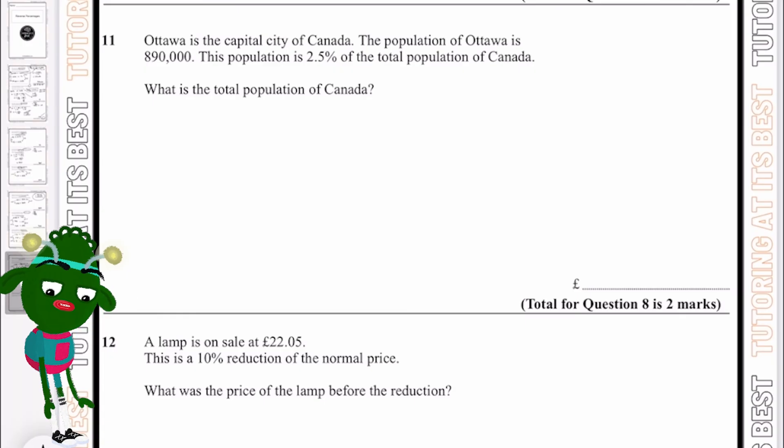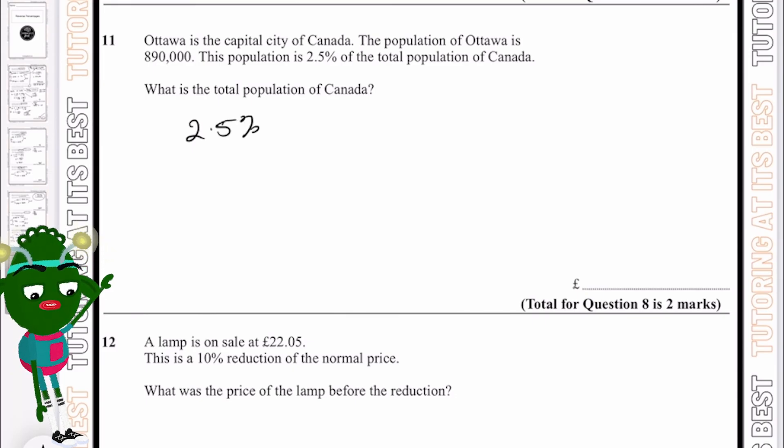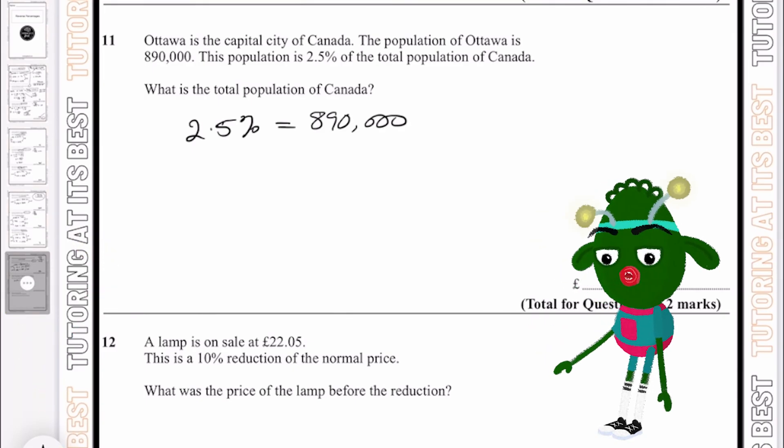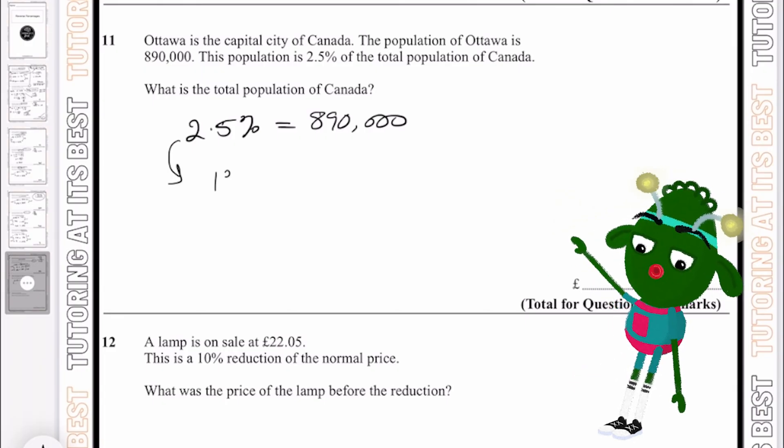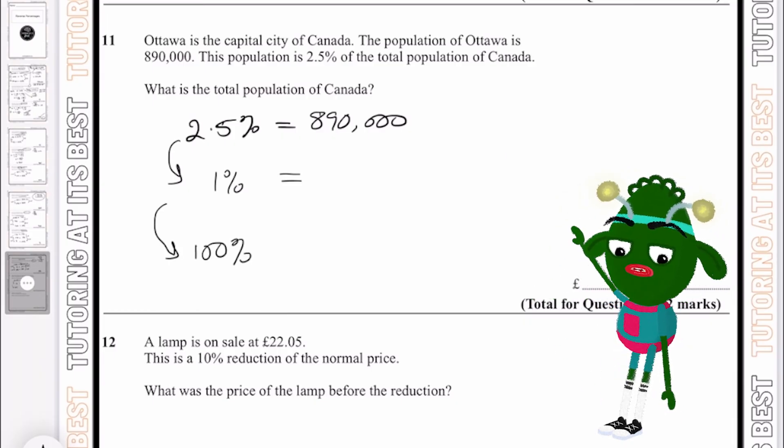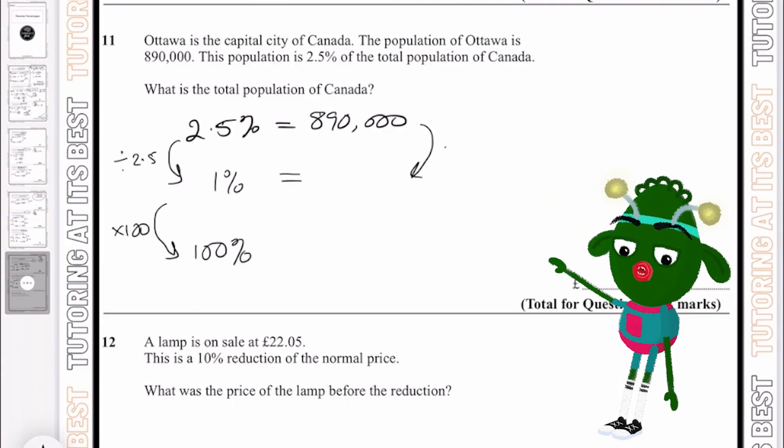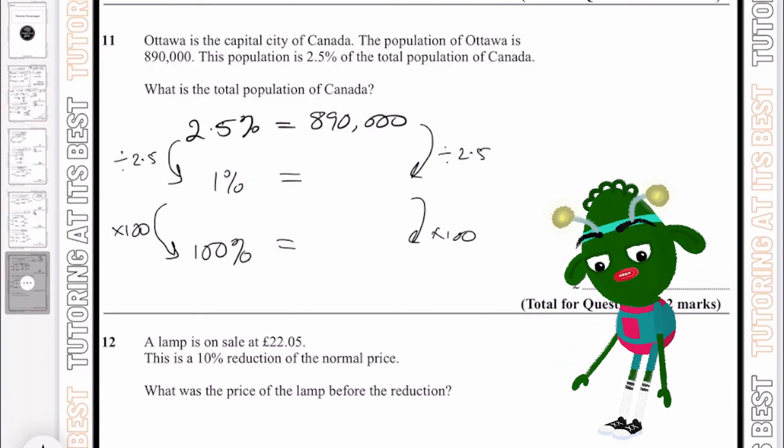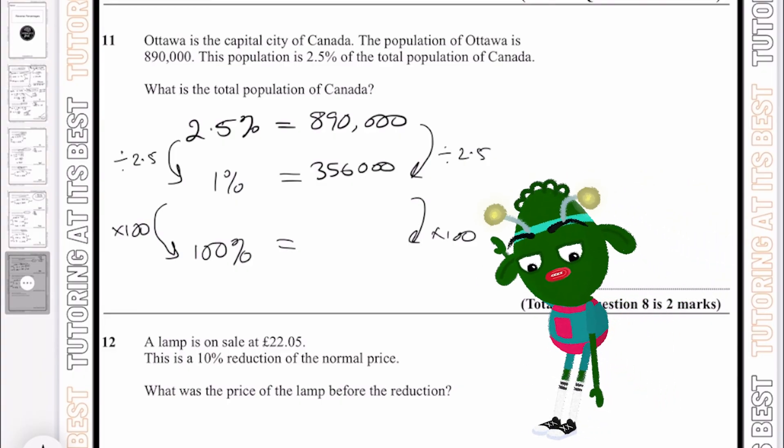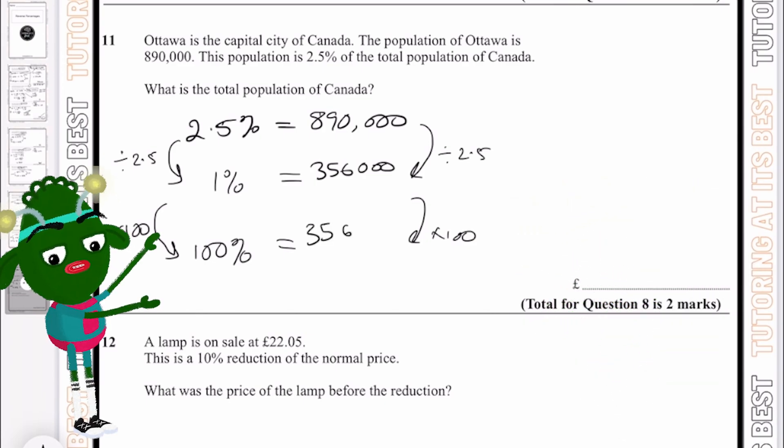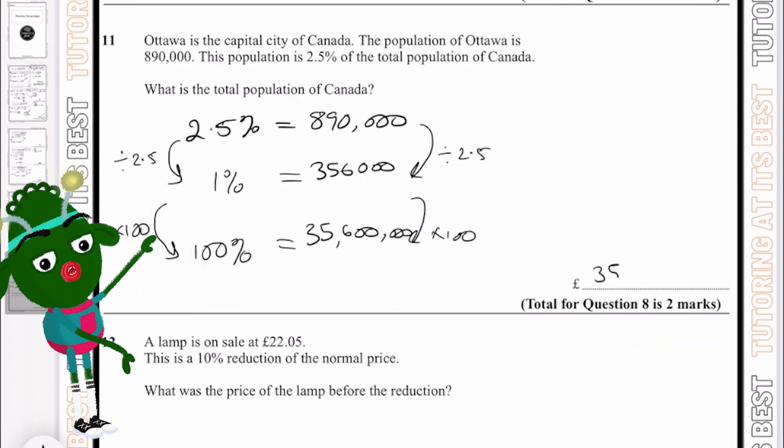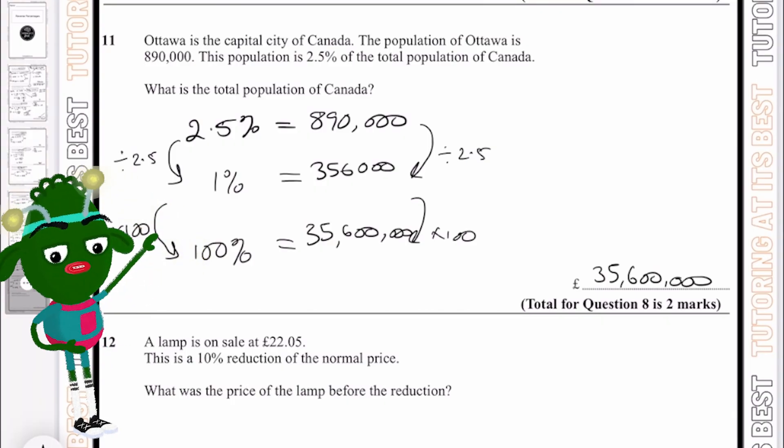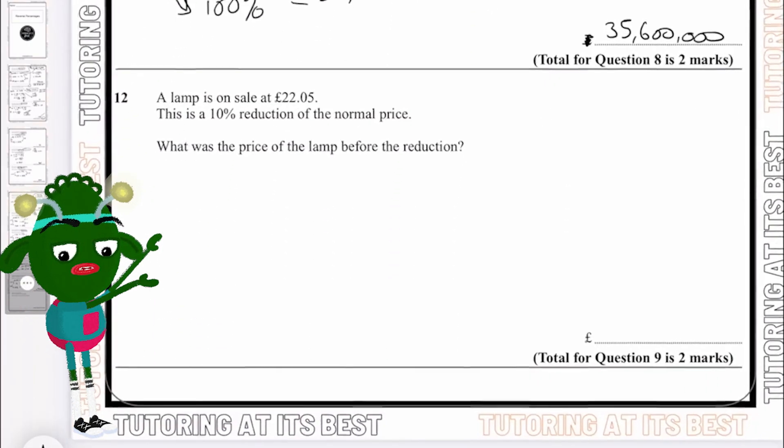We're almost at the end of this. Ottawa is the capital city of Canada, and the population is 890,000. This population is 2.5% of the total population, which means 2.5% is equivalent to 890,000. So once again, I'm going to calculate 1% and then calculate 100%. Divide both sides by 2.5 and then times by 100. So 890,000 divided by 2.5 is 356,000, and then times it by 100 gives 35,600,000. That's 35,600,000.